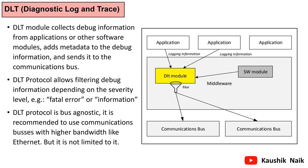Let me touch upon some brief introduction to this module. DLT is nothing but the Diagnostic Log and Trace module. It collects the log information either from applications or from other software modules like DET or DEM. Then it appends some metadata, also called the DLT headers, and sends it to the communication bus. The complete DLT frame with header and log data can be very lengthy, so it is recommended to use a higher bandwidth communication bus like Ethernet.